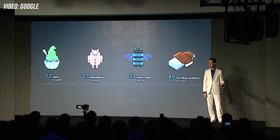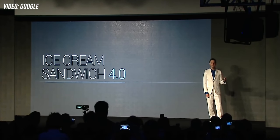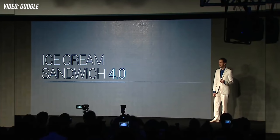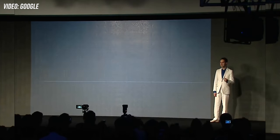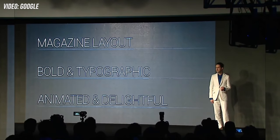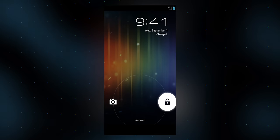Android 4.0 Ice Cream Sandwich arrived in October with the new Holo design language. Matthias Duarte appeared on stage at the Hong Kong launch event for the Galaxy Nexus — the first phone running Android 4.0 — and described their vision: simple typographic layouts with plenty of white space, eliminating lines, boxes, and unnecessary decoration, and imbuing everything with subtle animation and delightful flourishes to really make Android come alive.